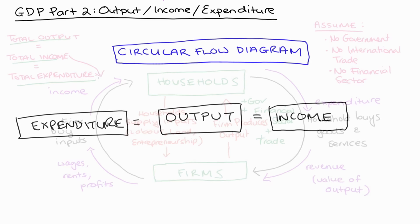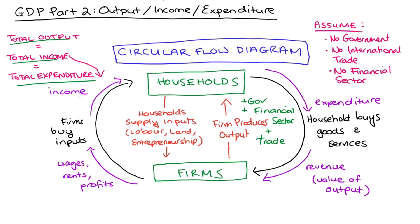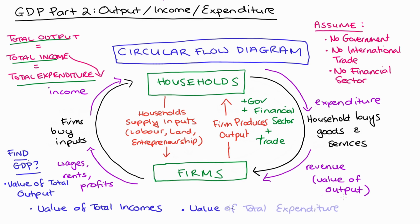Now, granted, there will be some differences between this very stylized model and the real world. You might have an underground economy, people might physically lose money, or people might hide money under their mattress. But apart from such cases, we do conceptually in economics take expenditure, production, and income to be equivalent in theory. If we wanted to find GDP in our very simple circular economy, we could do it three ways: we could find the value of the output, or we could equivalently add up total income, or equivalently look at total expenditure — we would get the same GDP regardless. And that's exactly what we do in practice with our real economies. There are three ways that we measure GDP: the value-added approach, the income approach, which adds up all the incomes in the economy, and the expenditure approach, which adds up all the expenditure in the economy.